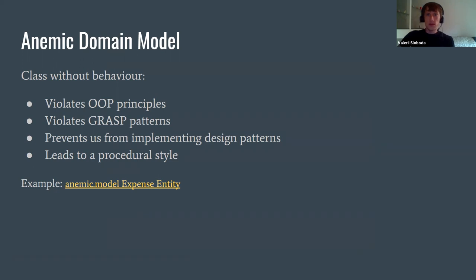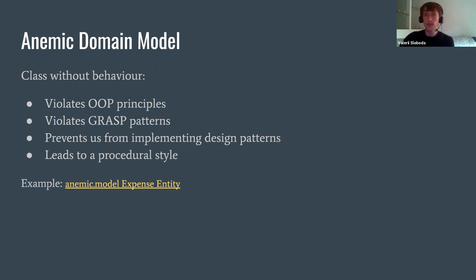So, domain objects in the anemic design shouldn't have any methods except getters and setters. Many authors like Martin Fowler consider this an anti-pattern and call it the anemic domain model. In the anemic domain design, all program logic is kept in the service layer — classes with 'service' or 'BO' suffixes, sometimes called business objects. The domain object doesn't have any methods that operate on class fields, so it has no behavior. This violates OOP principles and GRASP patterns, and it prevents us from implementing design patterns. It leads to a procedural style of programming.